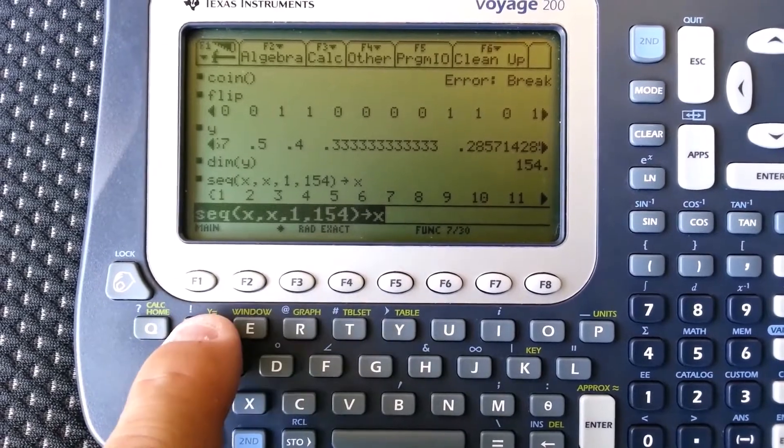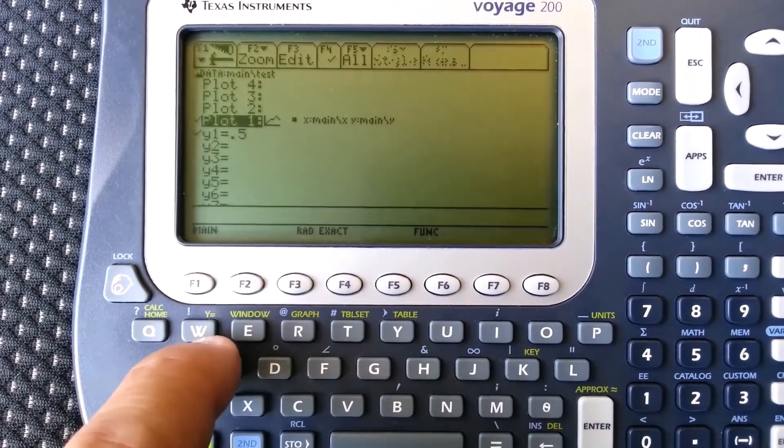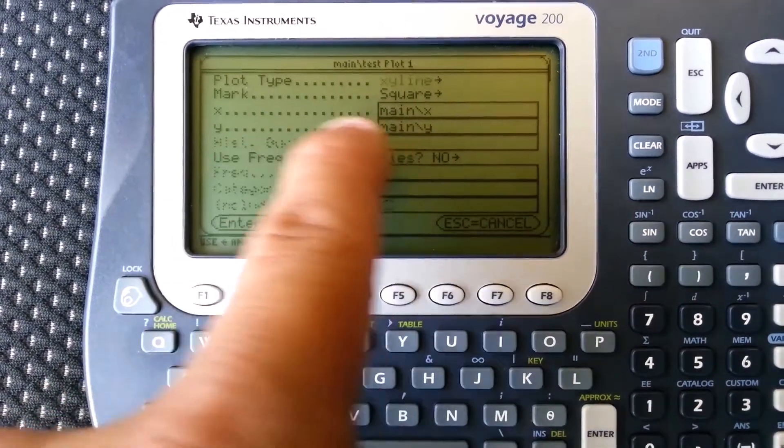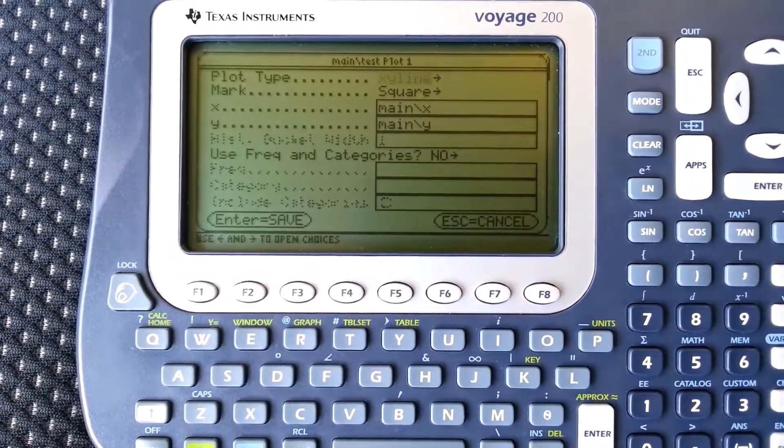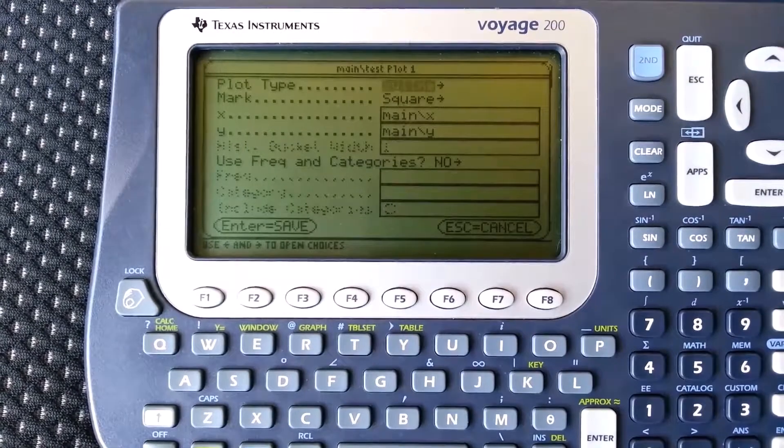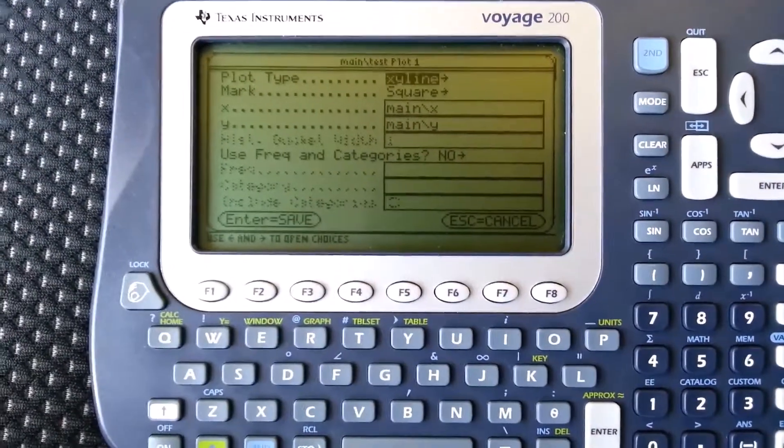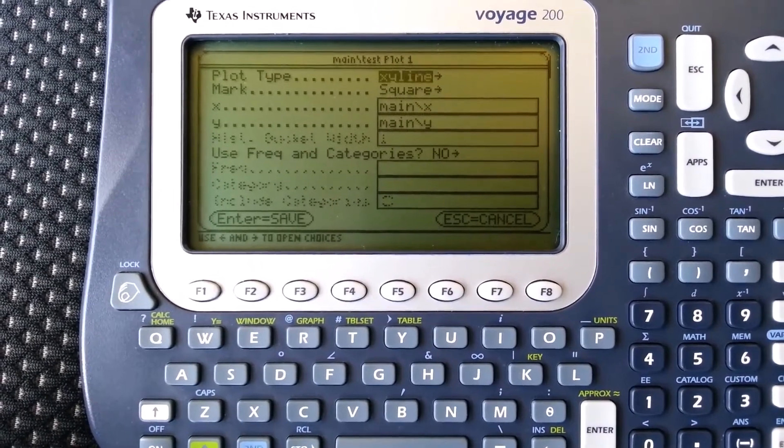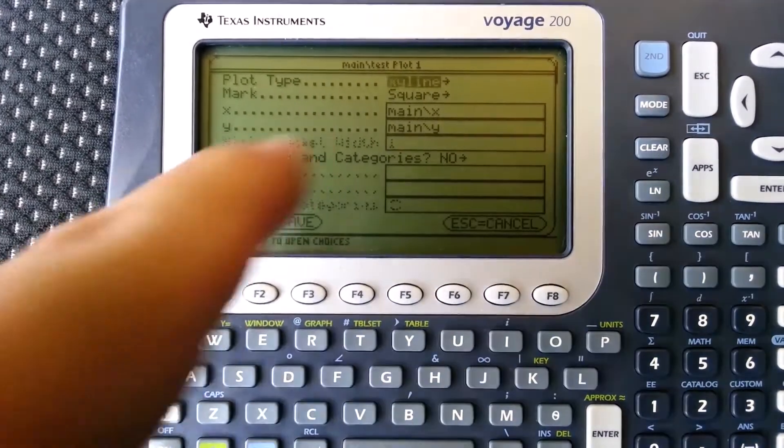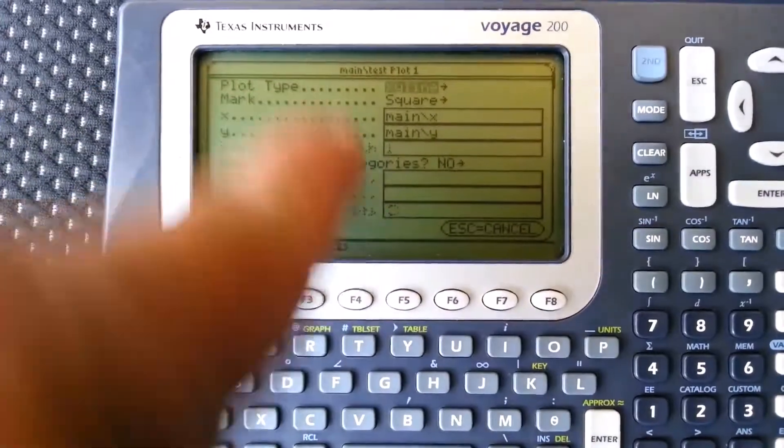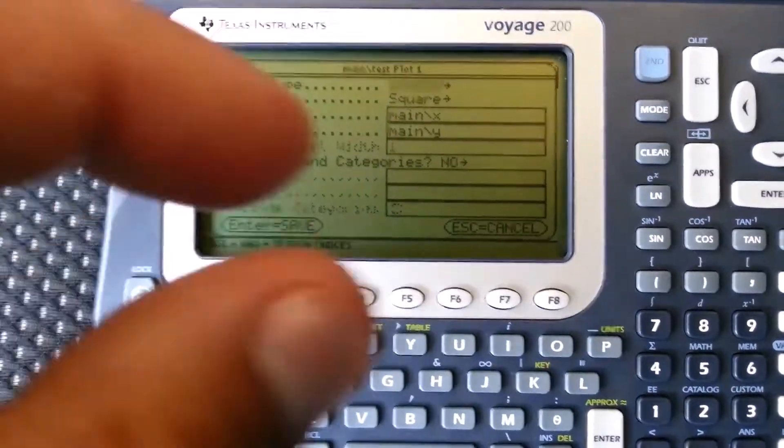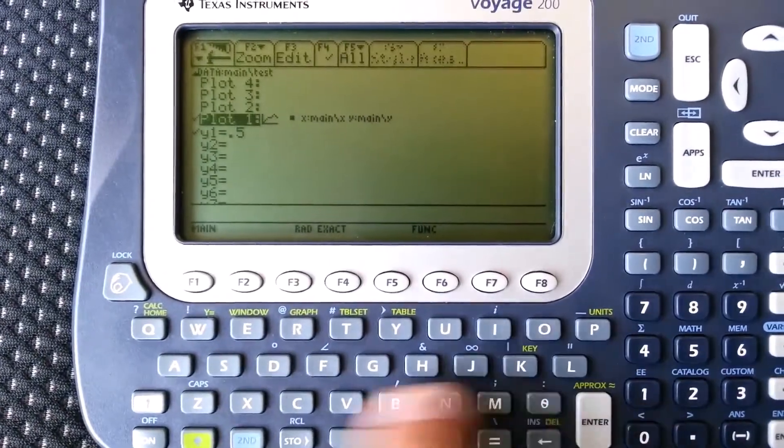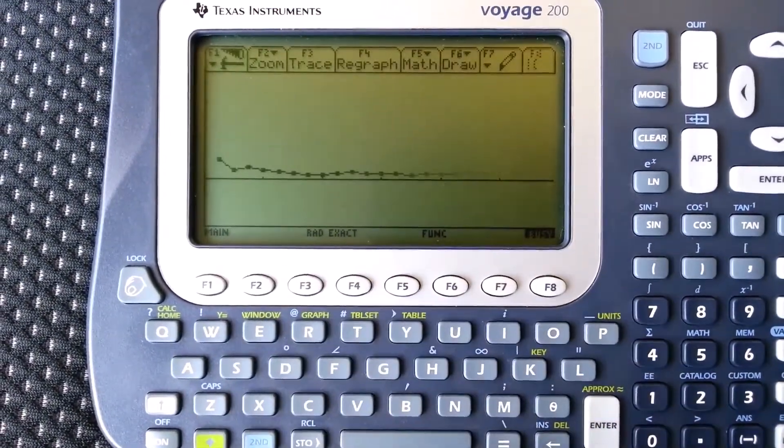Now I've already gone into my Y equals area and set up a plot. I'll show you, where for X I'm just graphing X, that sequence from 1 to 154, and for Y I'm graphing Y, which is the probability of heads. I'm doing it in a line, so graphing a line, and my mark for each point will be a square. So let's see what happens when I go to the graph.